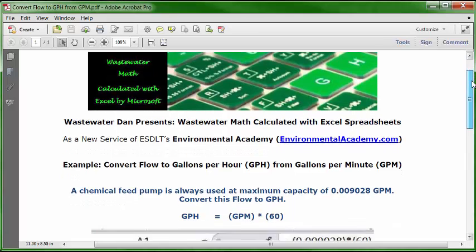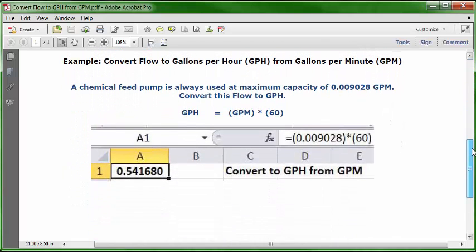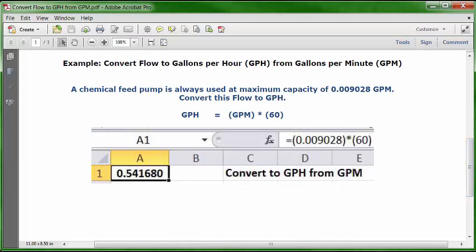So let's slide on down and see how we're going to insert this into an Excel spreadsheet. You can open up a blank Excel worksheet. You can put your cursor in C1, type this description: convert to GPH from GPM. And you can put your cursor in A1 and format it as numbers with six decimals, and set it as bold and centered.